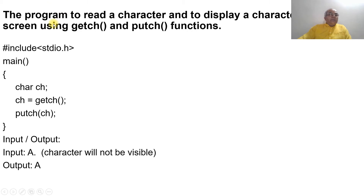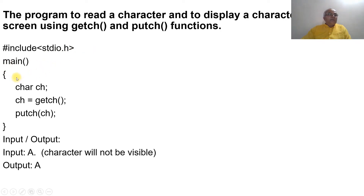Now we are going to take a simple program to read a character and display it on the screen using getch and putch functions. We have an executable program with #include stdio.h, a main function, and we declare a char variable named ch. We assign ch using the getch function.